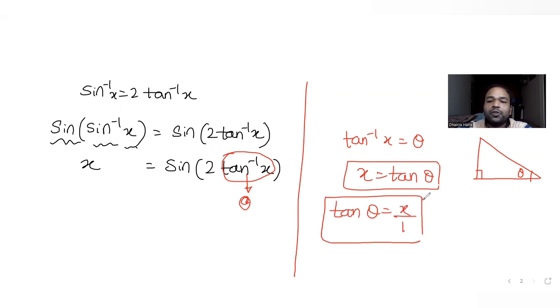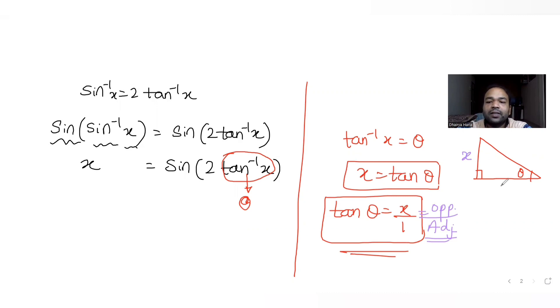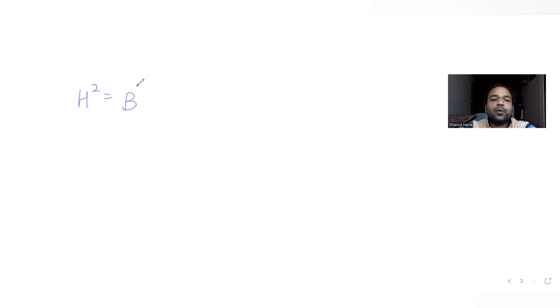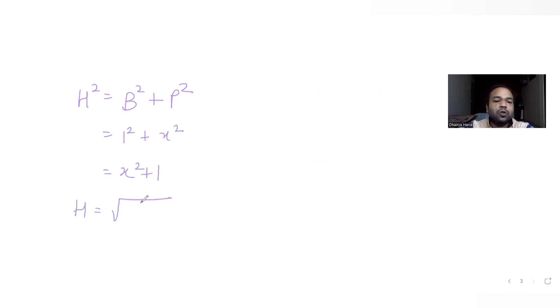From the triangle, tanθ = x/1 where opposite = x and adjacent = 1. Using the Pythagorean theorem, hypotenuse² = base² + perpendicular² = 1² + x² = x² + 1, so hypotenuse = √(x² + 1).